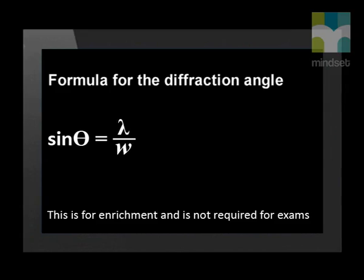This relationship means that we can get information about the wavelength, lambda, and the frequency of the light if we know the width, W, of the slit, and we can measure the angle theta.